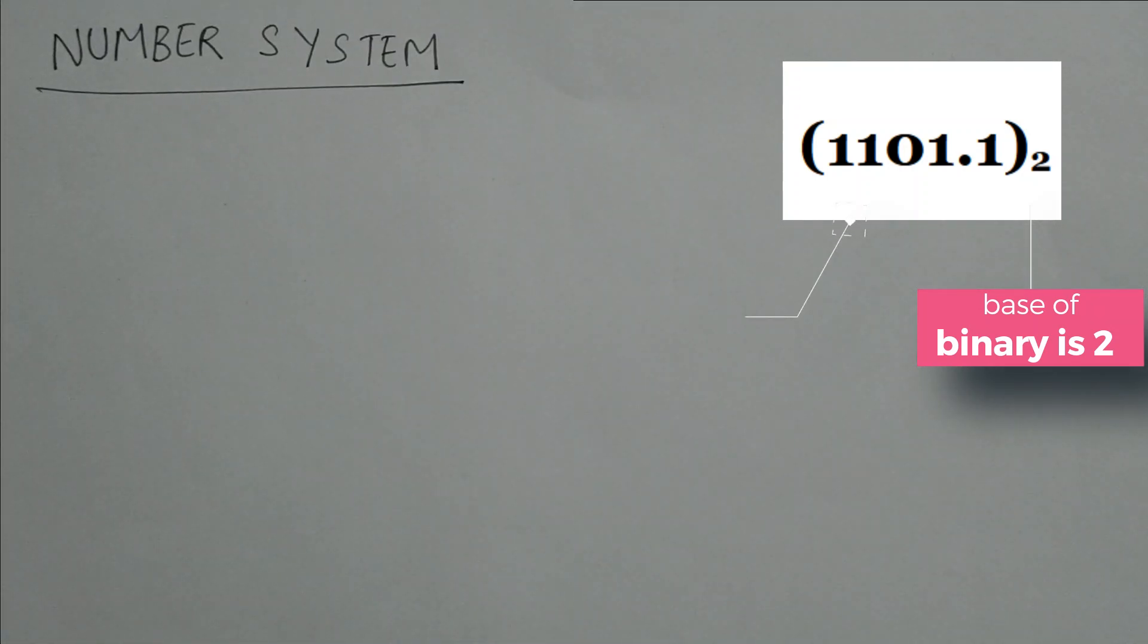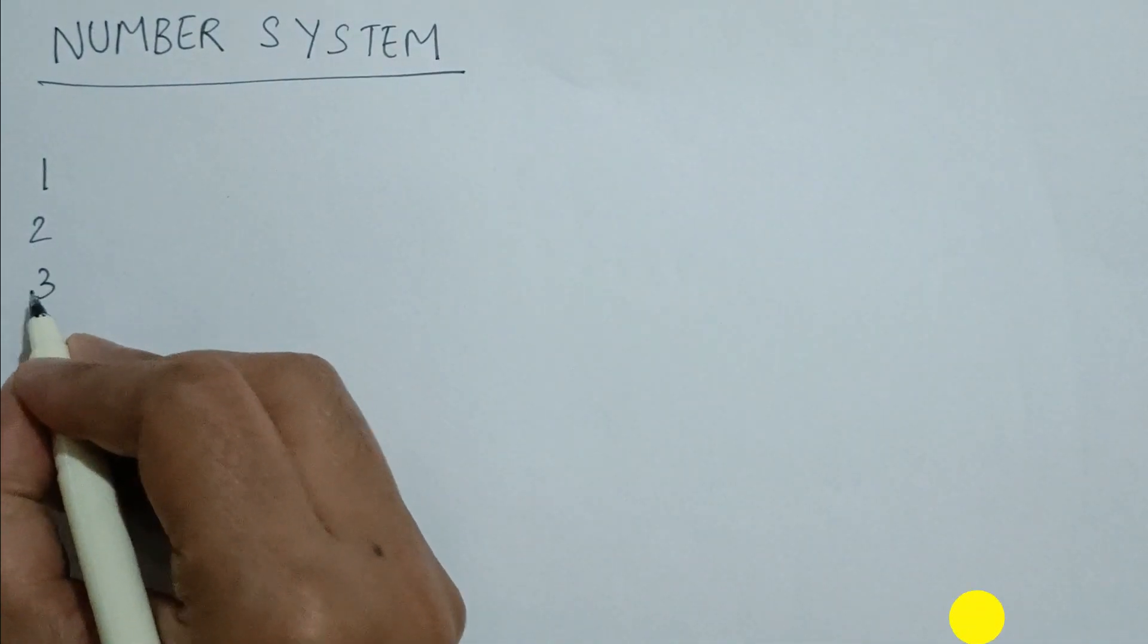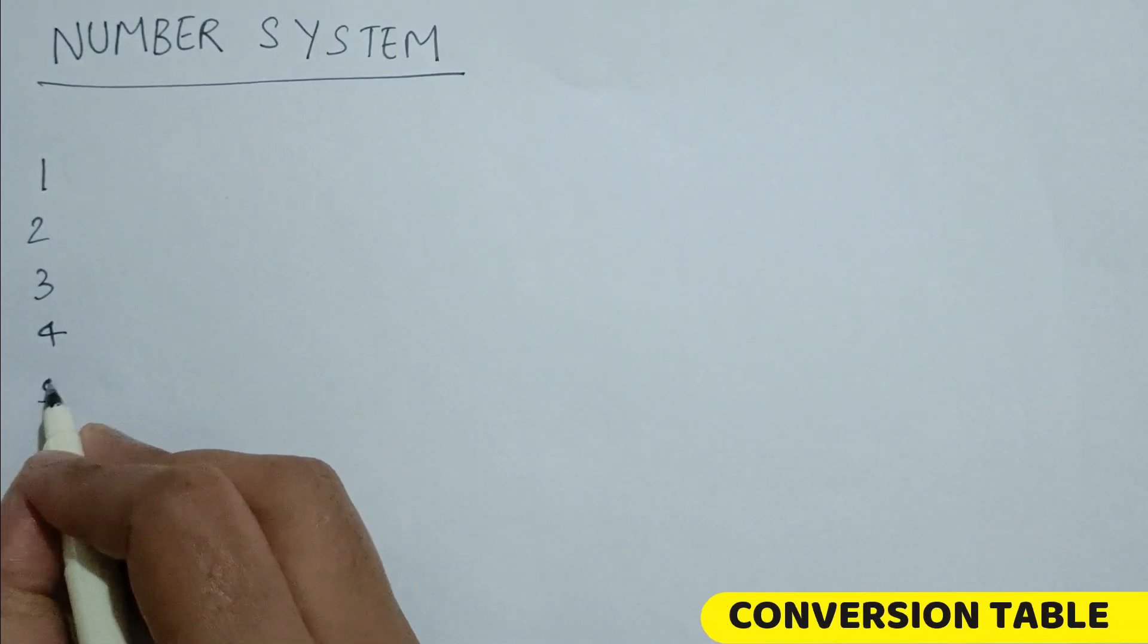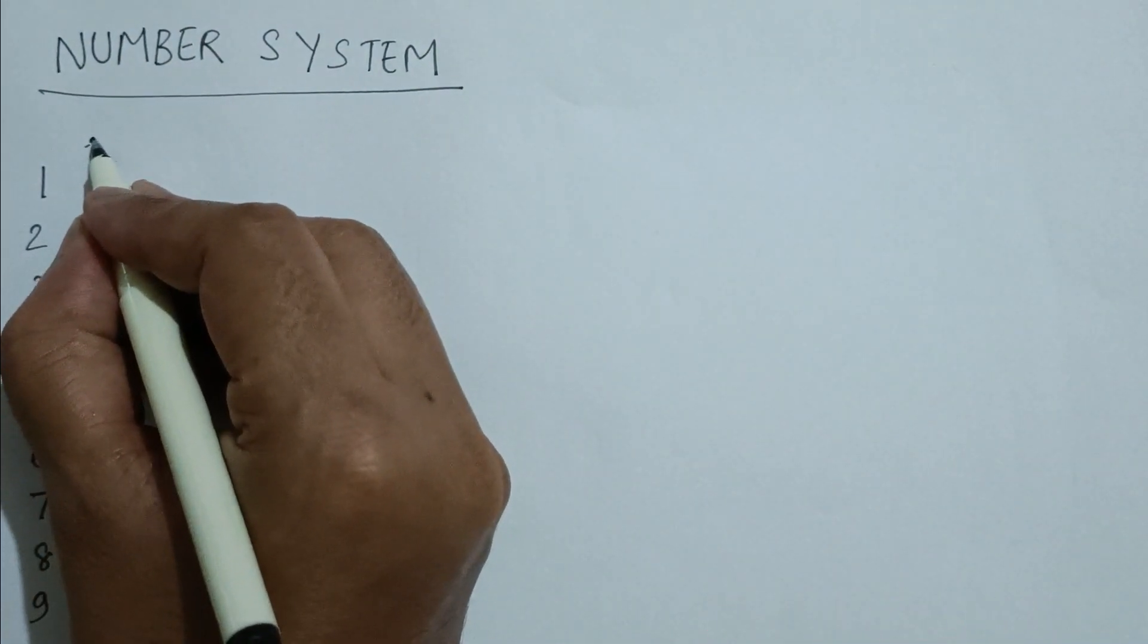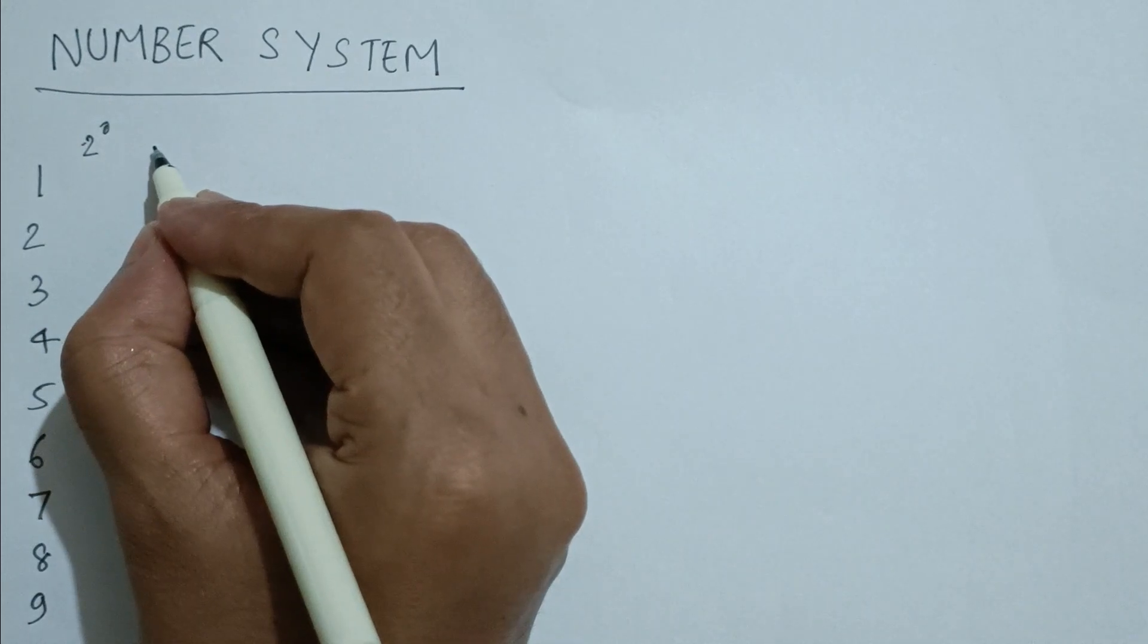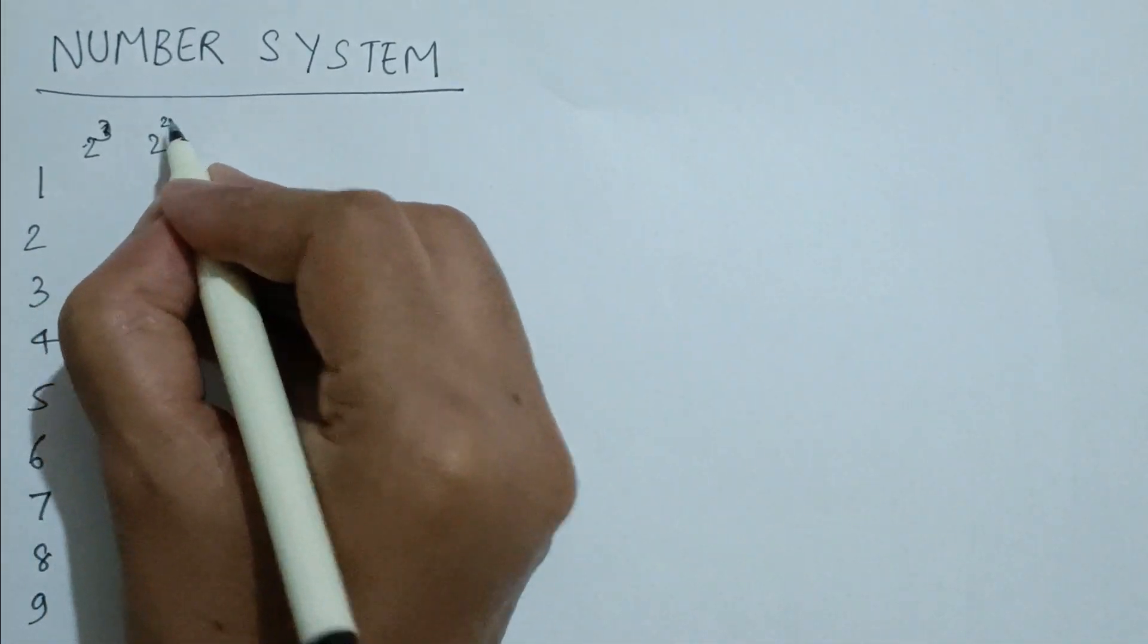You can see in the table we take four bits which start from 2 to the power of 0, 2 to the power of 1, 2 to the power of 2, and 2 to the power of 3.